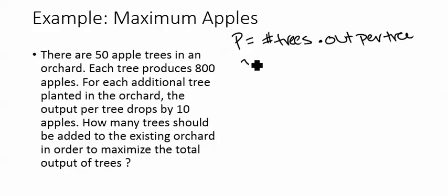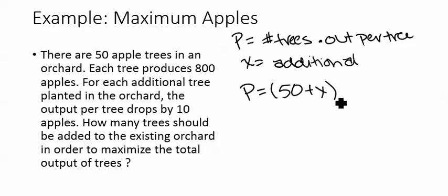We're going to say that x equals the number of additional trees. Because notice it says we already have 50 trees. So that means our production is going to be the number of trees, which is 50 plus x would be our total trees, times the output per tree. So we have to look at what happens to the output as we added those additional trees.